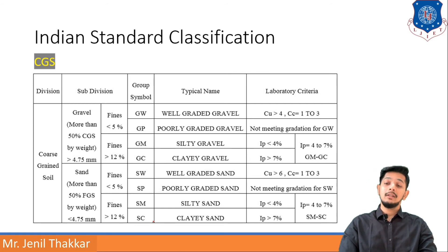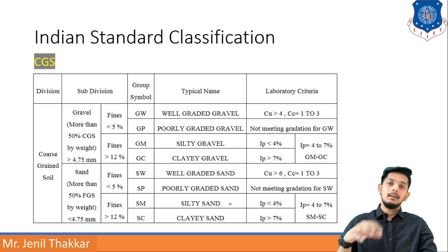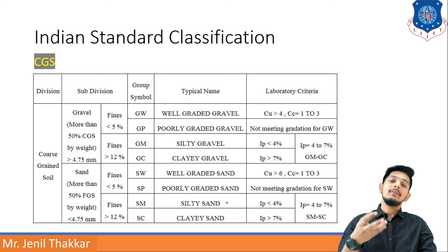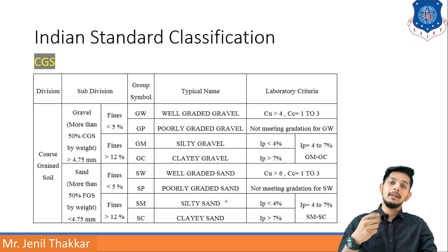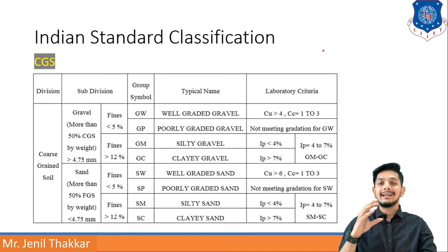If fines in the sand are greater than 12%, consider two options: SM (silty sand) and SC (clayey sand). Check IP again. If IP is less than 4%, it will be SM. If IP is greater than 7%, it will be SC. If IP is between 4% and 7%, it will be SM-SC. This is how you divide CGS according to Indian Standard classification.